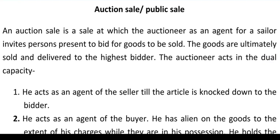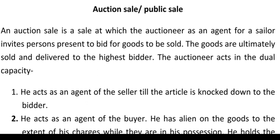Auction sale के पहले negotiation यानि bargaining करना practice में था। हमें कोई भी चीज़ अगर पसंद आती है तो हम उस चीज़ को bargaining करते हैं price के point of view से — मतलब buyer चाहता है कम से कम कीमत मिले, और seller चाहता है ज़्यादा से ज़्यादा price value मिले। फिर उसके बाद नया trend आया — that is auction sale.